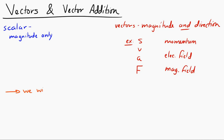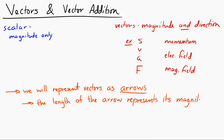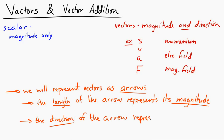We're going to start representing vectors as arrows. The reason for this is that with an arrow, you can represent the magnitude of the vector by its length — the length of the arrow represents the magnitude. The direction of the arrow will represent the direction of the vector. Simple as that.